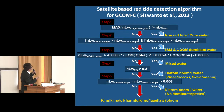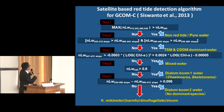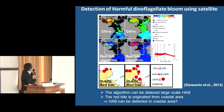This is a schematic image of the satellite-based red tide detection algorithm for GCOMC. Without going into detail, by using this algorithm, harmful dinoflagellate blooms can be detected using radiance from the ocean — specifically, the slope difference of the radiance from the ocean, the radiance criteria, and chlorophyll-a concentration. This is an example of detection of harmful dinoflagellate bloom using a satellite.